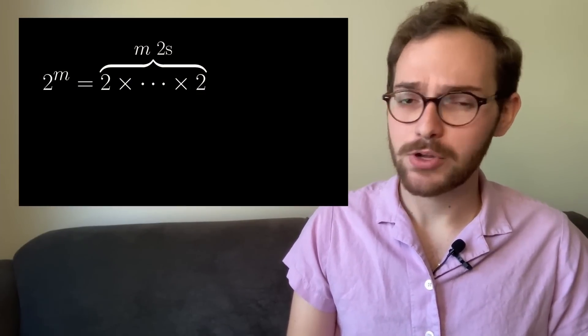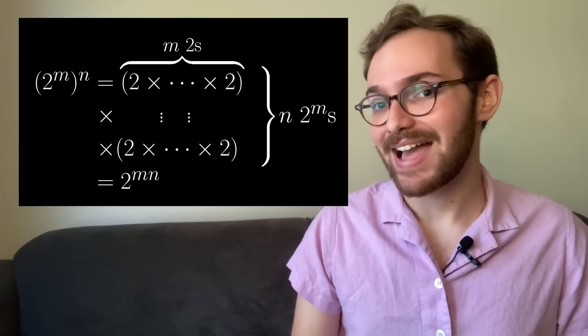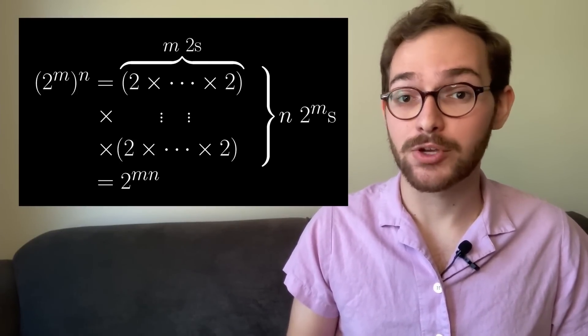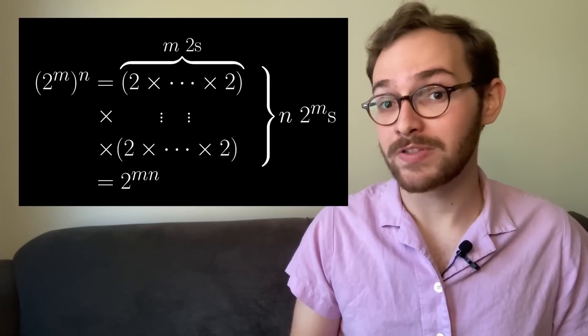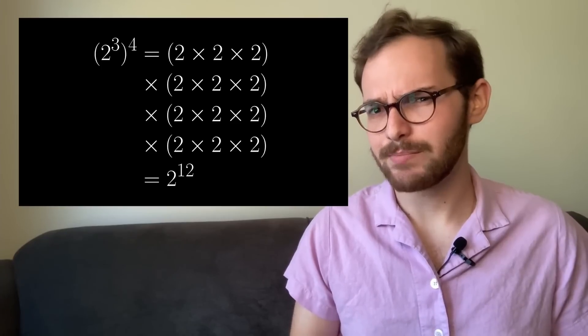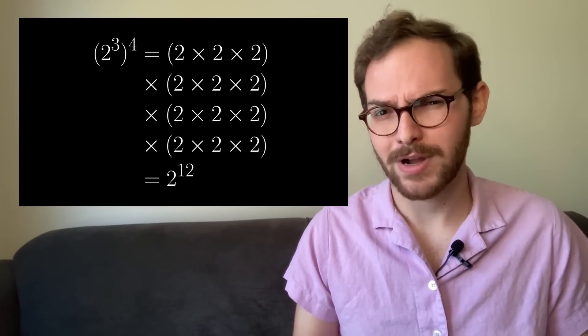Let's start by reviewing some properties of exponents. For a positive integer m, 2 to the m is 2 times itself m times. And if we raise that to the n, then we're multiplying m times n total twos, so 2 to the m to the n is 2 to the m times n. For example, 2 cubed to the 4th is equal to 2 to the 12th because 3 times 4 is 12.